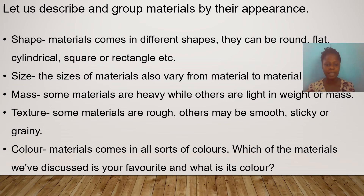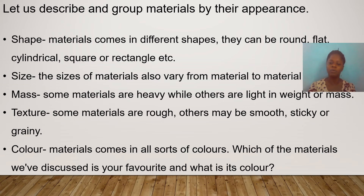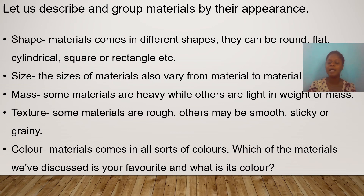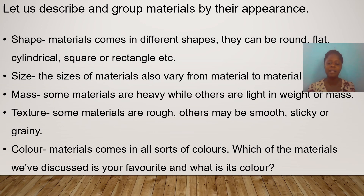Materials also come in different sizes, which vary from material to material. If you take something like stone, you could see they were smaller in size, but if you look at the wood, it was bigger in size. Now let's look at mass — some materials are heavy and others are light. When you compare plastic and metal, you can see that the metal is heavy and the plastic is light.